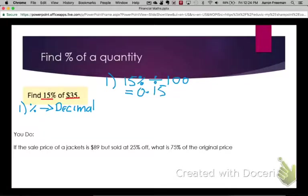The second step is to multiply the decimal by the quantity.